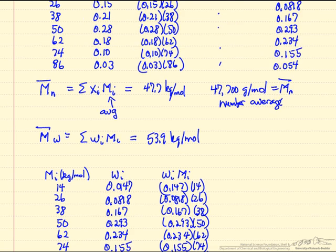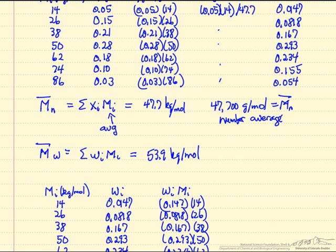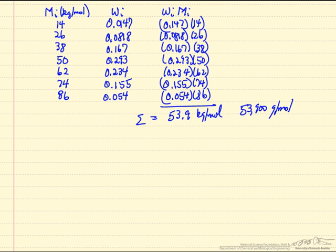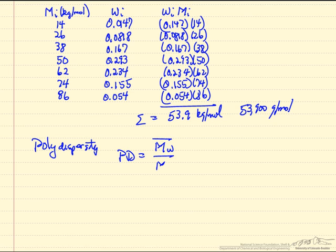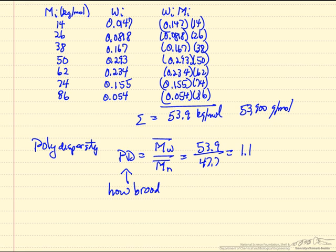Notice the weight average is larger than the number average — that's to be expected, since we're putting more emphasis on larger polymers. We can also calculate the polydispersity, which is the weight average molecular weight divided by the number average: 53.9 over 47.7 gives 1.1. This indicates how broad the molecular weight distribution is — and 1.1 is a fairly narrow distribution.